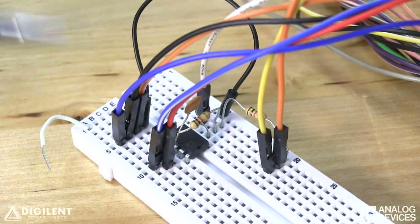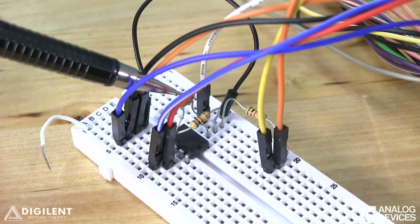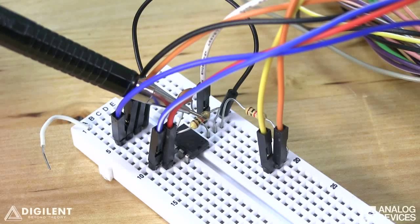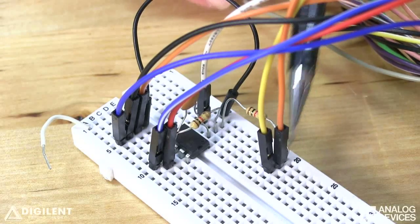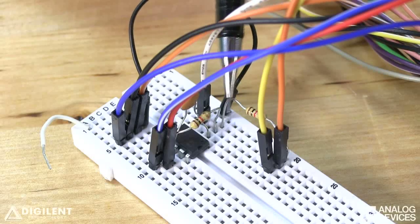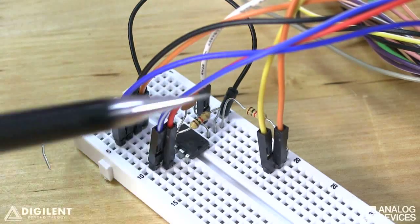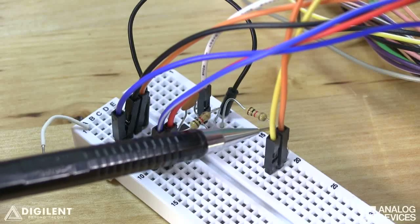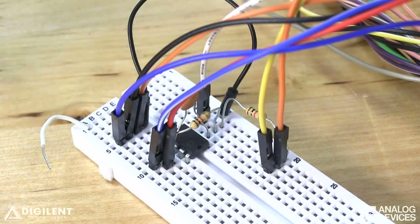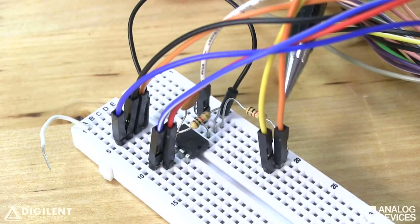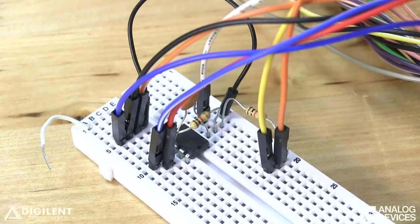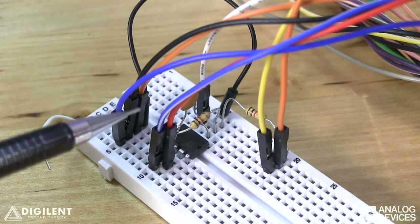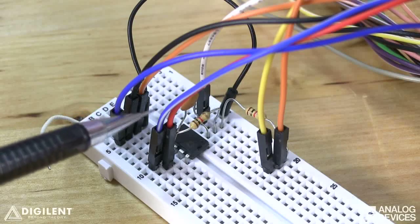Here's our active filter. Our feedback capacitor is here. The resistor that's in parallel with our capacitor is here. This is the resistor between our input and the inverting operational amplifier input. We're applying voltage to this with channel one of the waveform generator. We're measuring our input with channel one of the oscilloscope, and we're measuring our output with channel two of the oscilloscope.